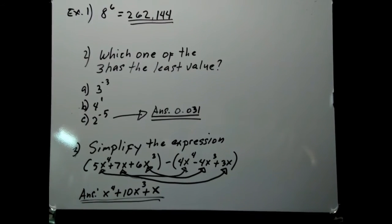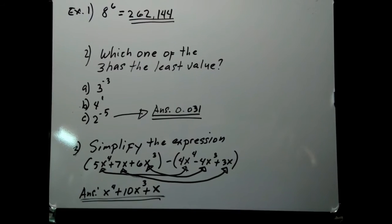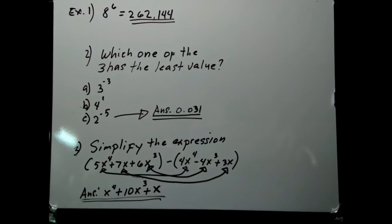Example two: which one of the three has the least value? You need a calculator for this. Which one of the three has the least value? The options are: 3 to the negative power of 3, 4 to the power of 1, and 2 to the negative power of 5.